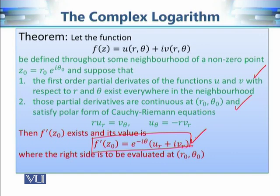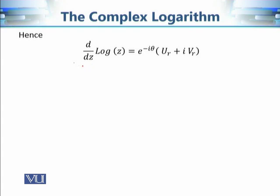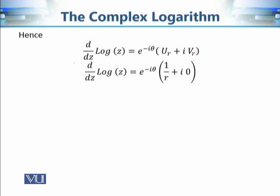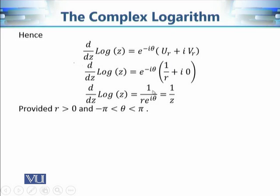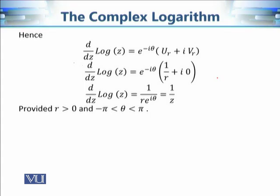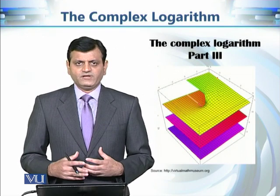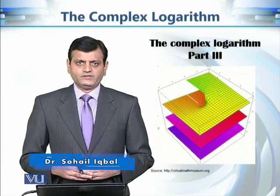The derivative equals e^(iθ) · (u_r + iv_r). Since u_r = 1/r and v_r = 0, this becomes (1/r)e^(iθ). Since z = re^(iθ), this simplifies to 1/z. So the derivative of the principal value of the logarithm is 1/z, which is compatible with the real analysis result that the derivative of log(x) is 1/x.